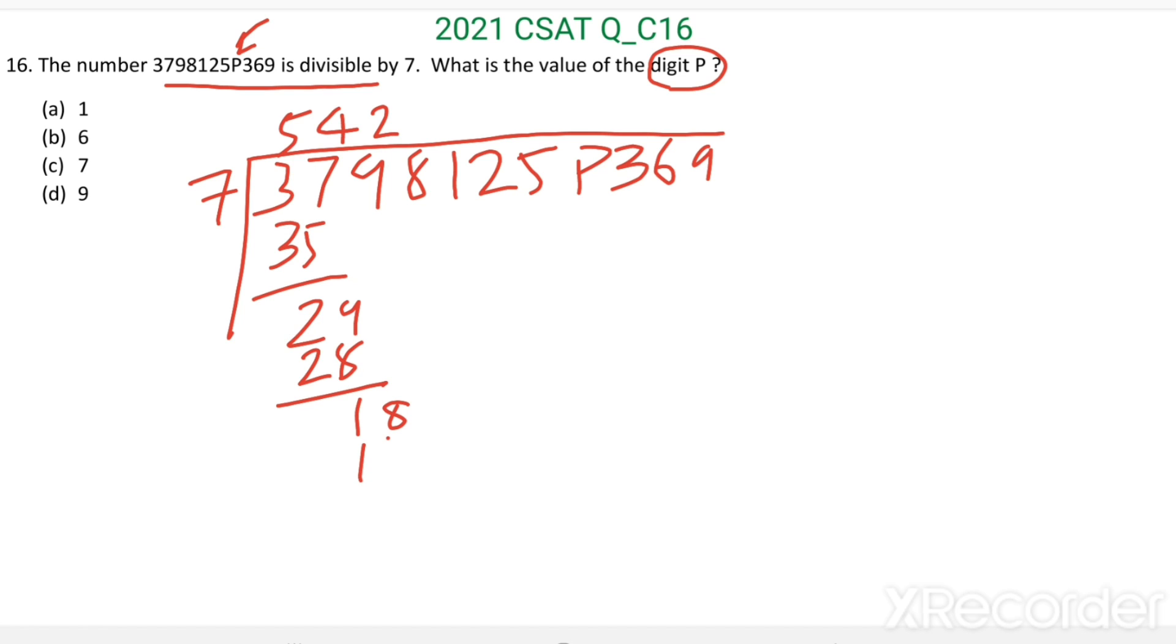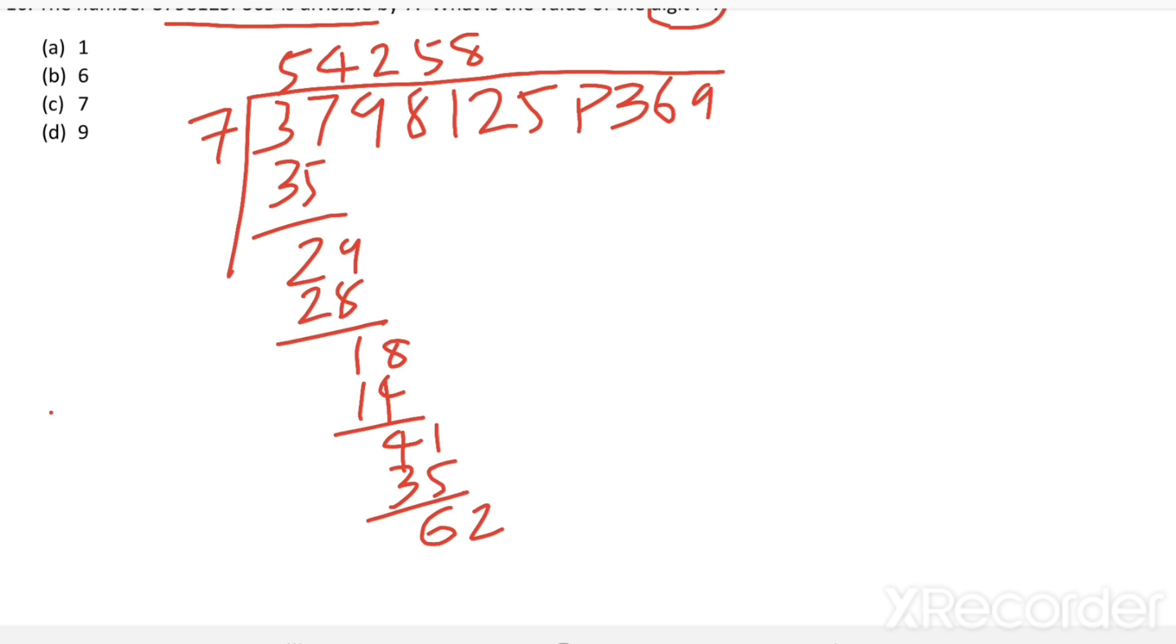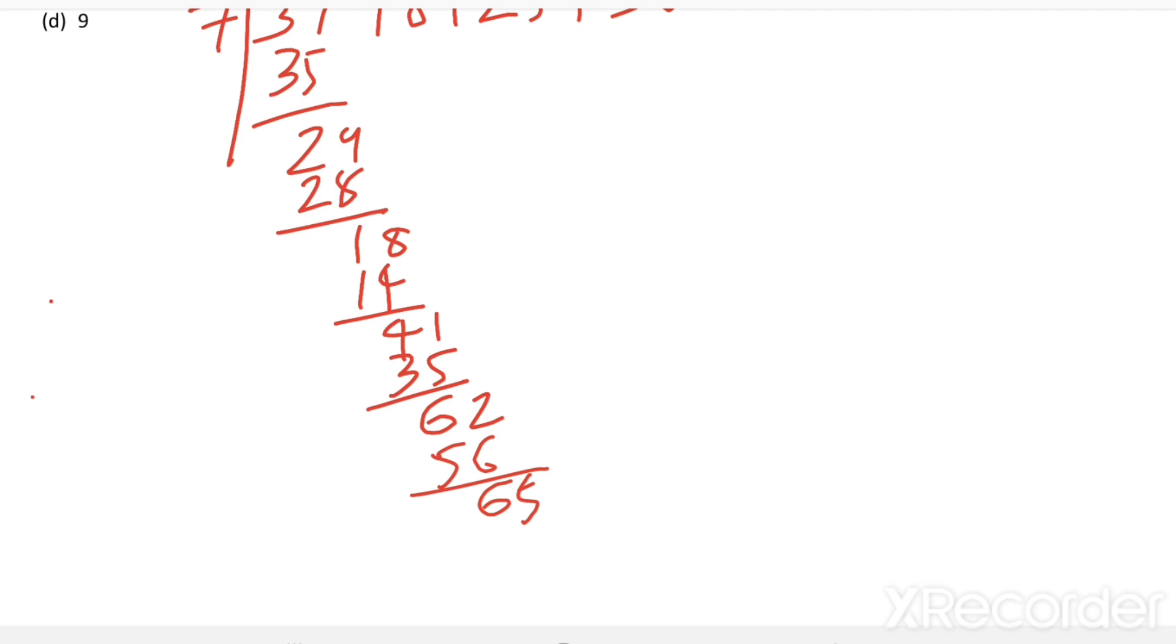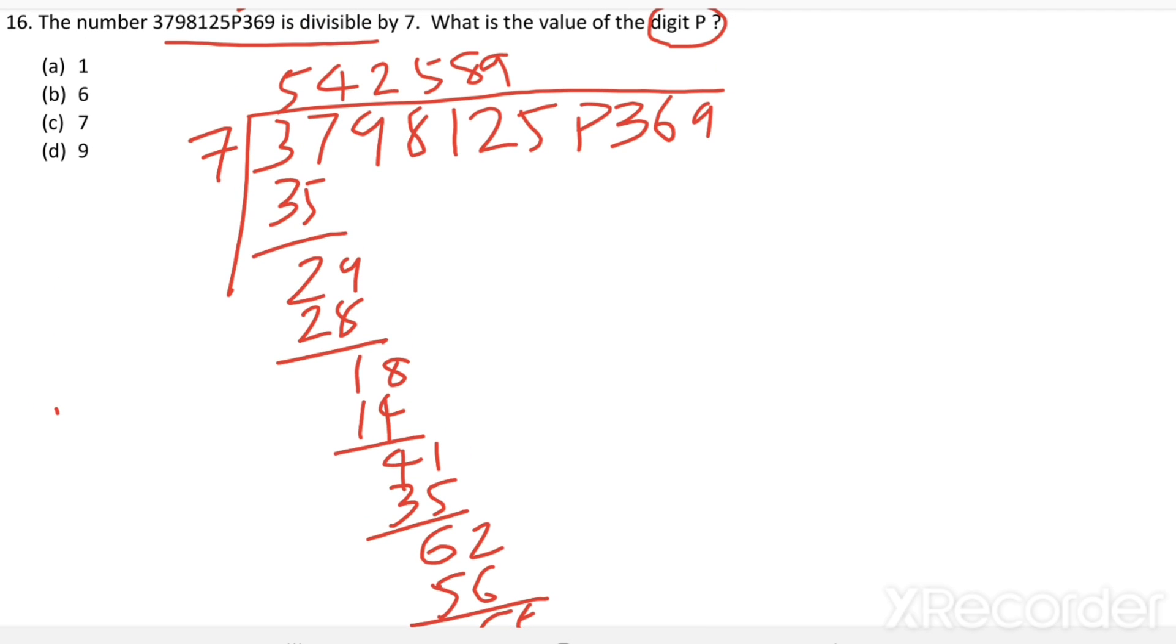2 7s are 14, 5 7s are 35, 8 7s are 56, then 9 7s are 63. 9. Next digit here it is P.